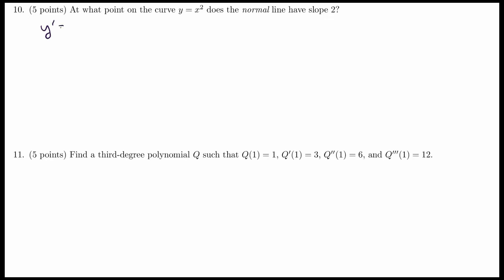y prime is going to be 2x. And if we have a normal line slope of 2, that means the tangent line slope must be equal to negative 1/2. So we end up with this question: when does...